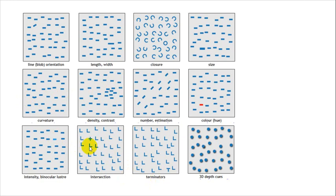These are bizarro things: intersection, terminators, number estimation, closure, size, color was an obvious one,